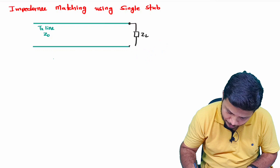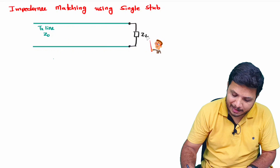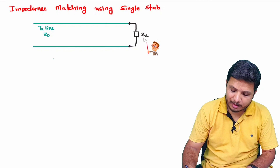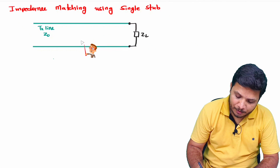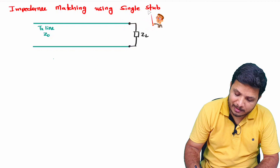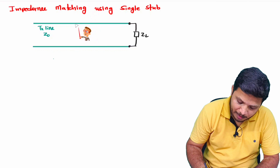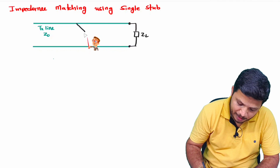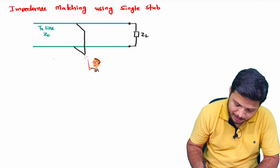If the transmission line impedance Z0 and ZL are not matching to each other, there is a possibility of reflection of signal. To reduce reflection we need impedance matching, and in this video I'll provide single stub impedance matching by placing one short-circuited stub.